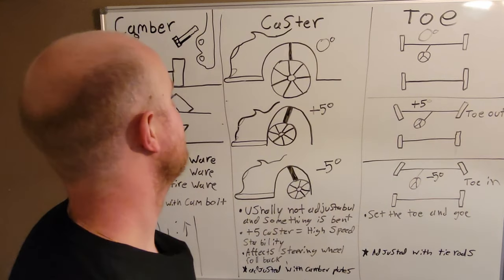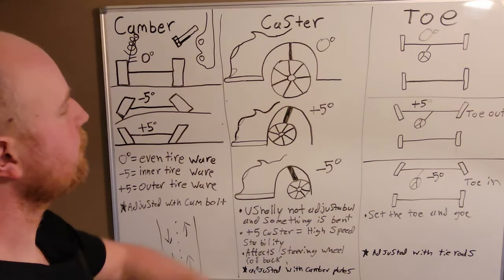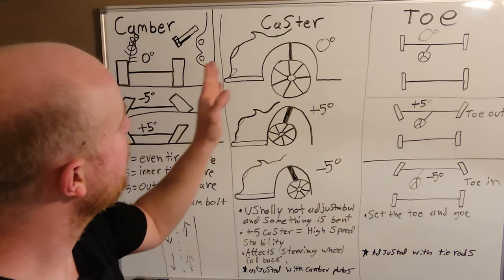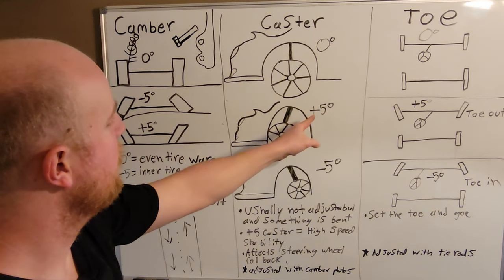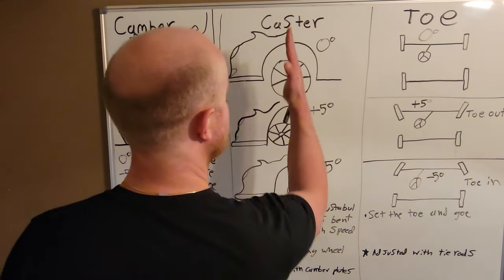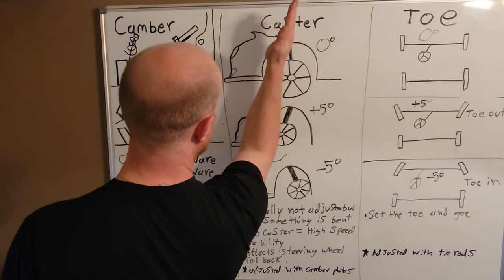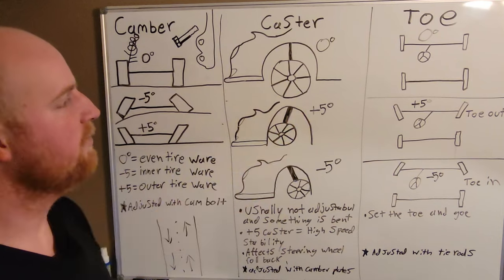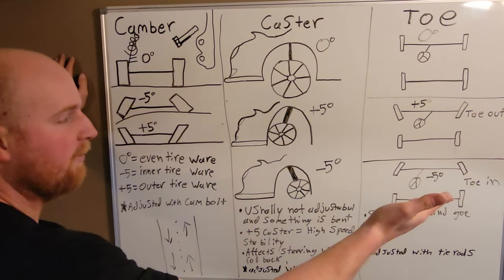Let's move on to caster. Caster is usually not adjustable on cars, it's usually set from the factory. Caster is where your wheel is positioned inside the wheel well. If you were looking at the car from the side, this would be zero degrees caster, it's right in the middle. Now this would be positive five degrees caster. That means your caster would be set like this and then tightened and locked in that position. Positive caster will give you more high speed stability because it's actually making your car longer.